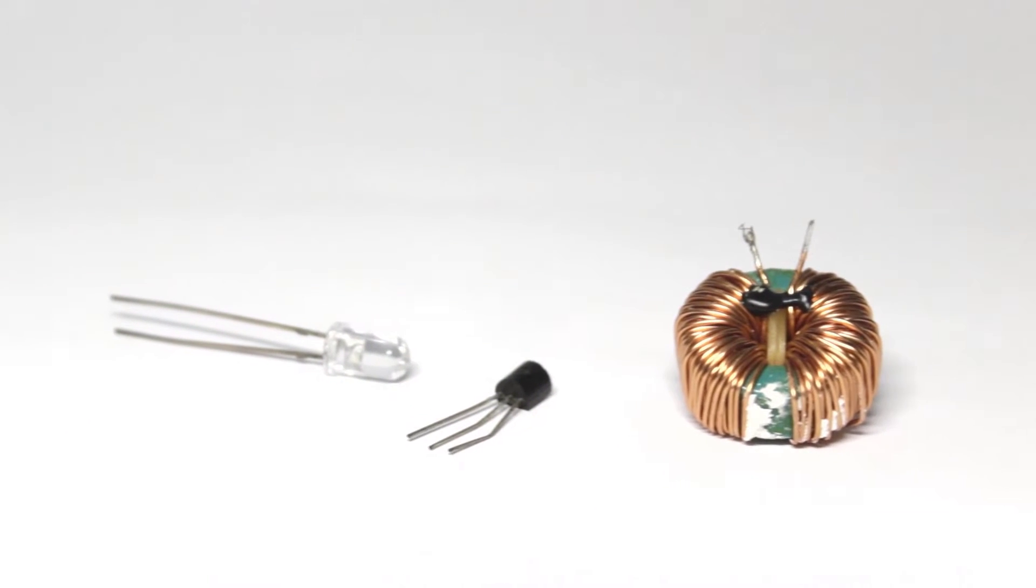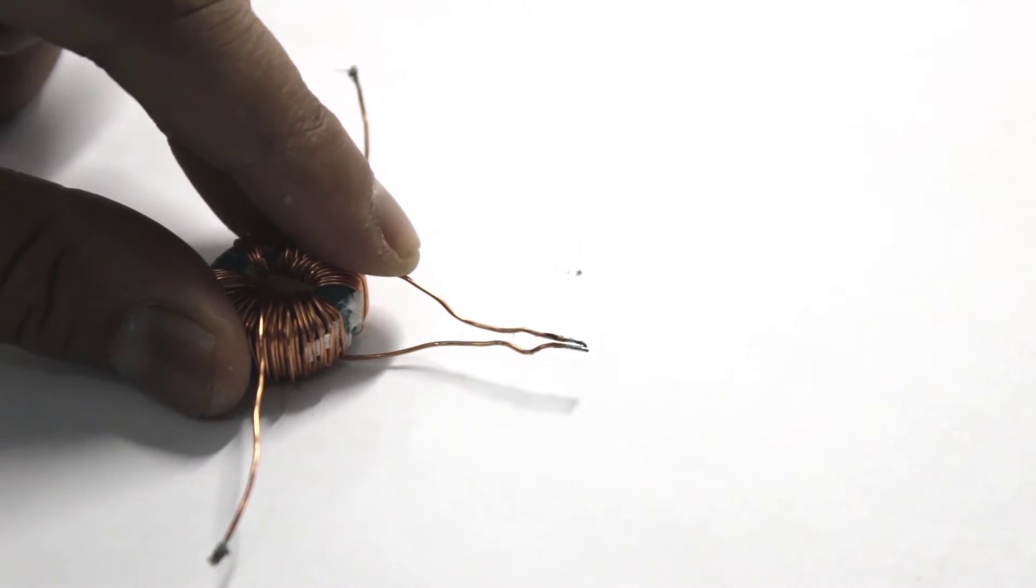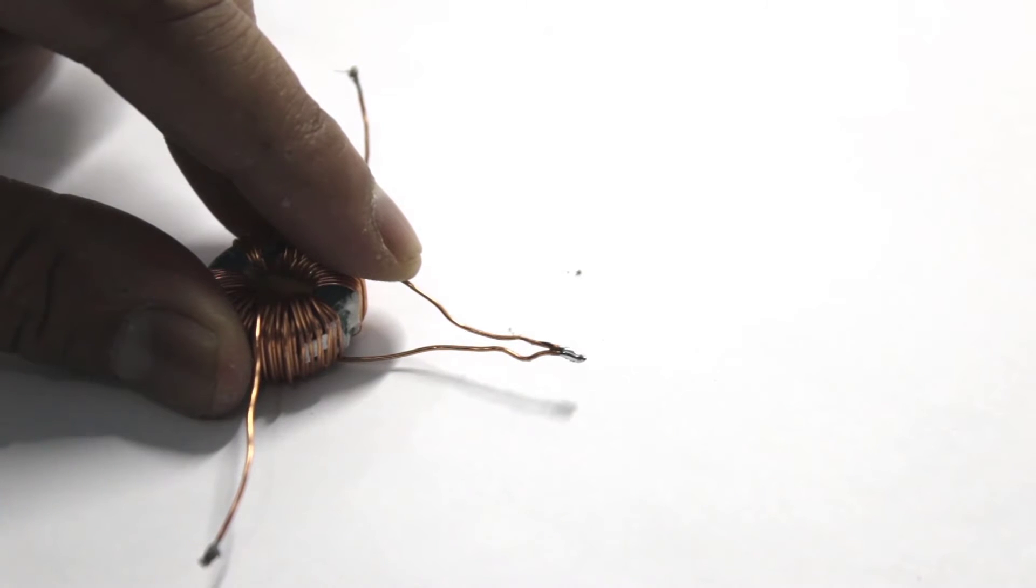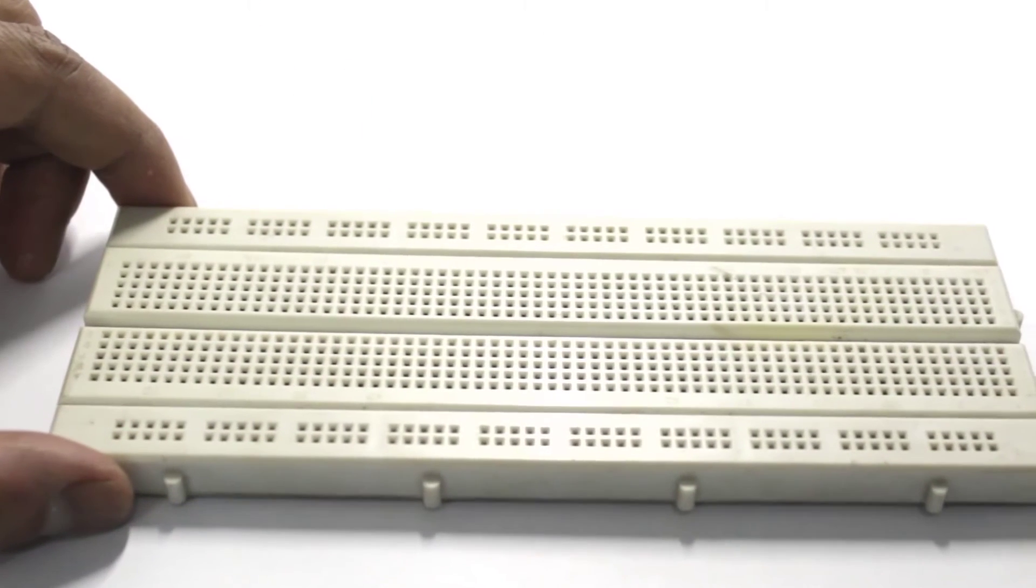I used a toroid, BC547 transistor, and LED to make this circuit. I then connected the alternate winding of the toroid, and after that it was time to breadboard all the components.